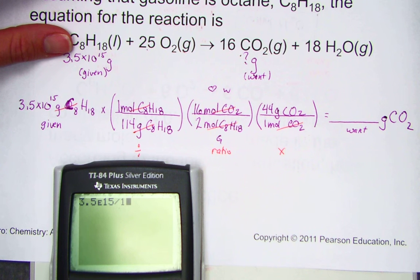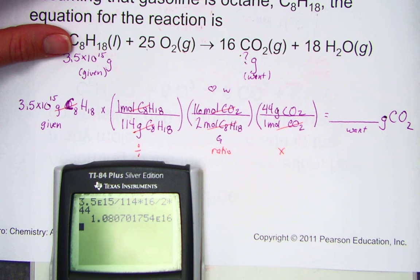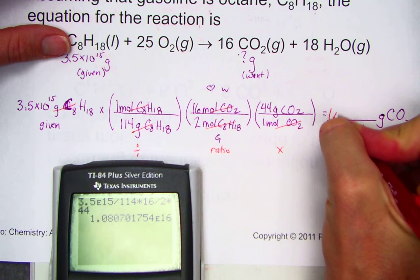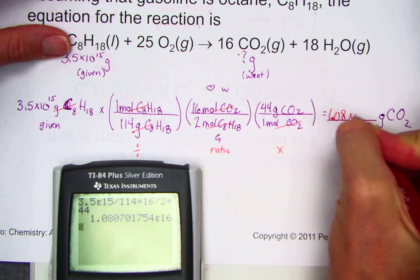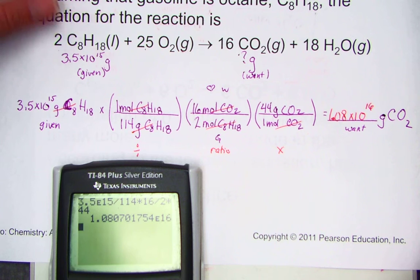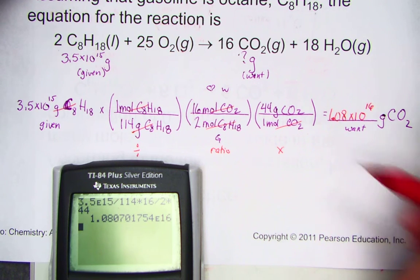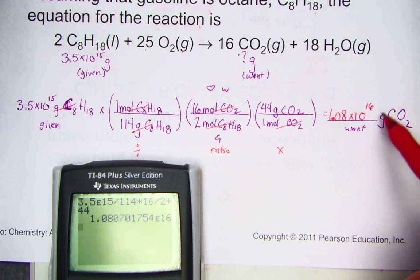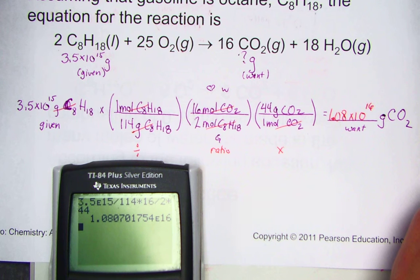We'll divide by 114, the molar mass of octane. Times 16 over 2 for the ratio. And times 44 to bring it out to grams of CO2. Our final answer, 1.08 times 10 to the 16th power grams of carbon dioxide. We burned a whole lot of gasoline. It looks like we've produced even more carbon dioxide. Your book will chat about contributing to the greenhouse effect and global warming as the after effect of burning gasoline.